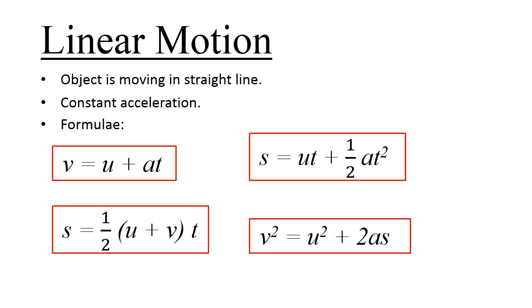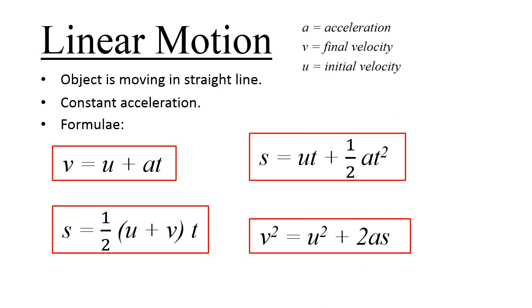Remember, these four formulae are extremely important for calculation purposes, so make sure you remember them as well as possible. What do these letters represent? A represents acceleration. V represents final velocity. U represents initial velocity. S represents displacement. And T represents time.